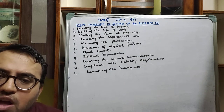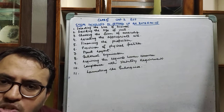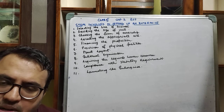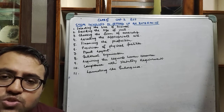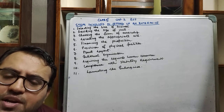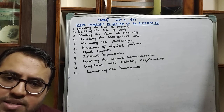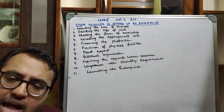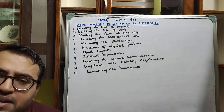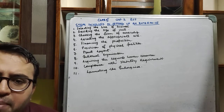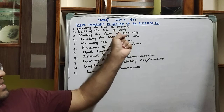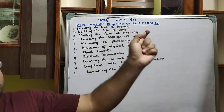So these are 11 steps — numerous steps which have to be followed while launching or establishing an enterprise. We will discuss the introductory part first, and then after that we will cover in detail all the bits and parts. First one is selecting the line of business.